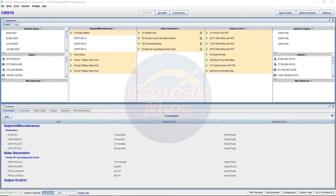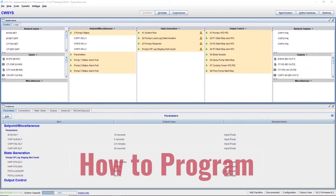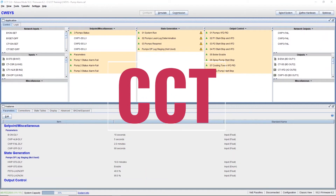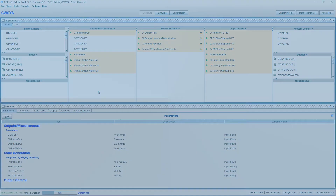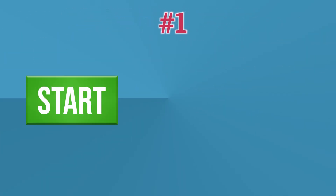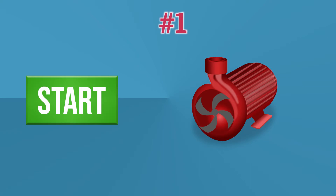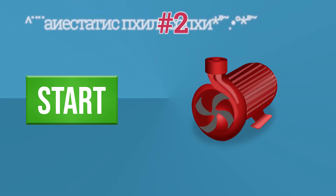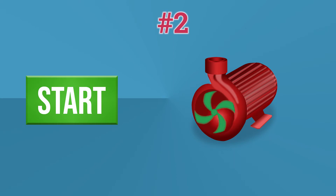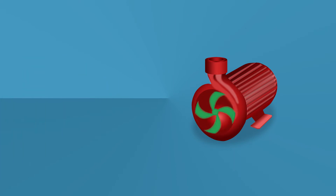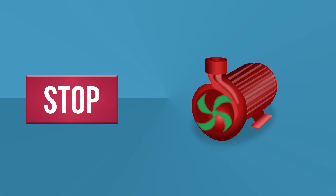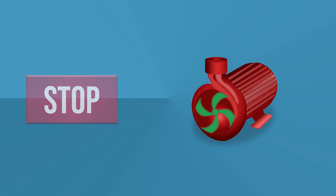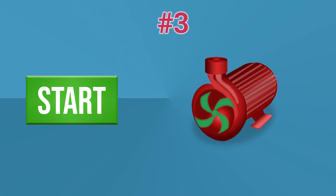Welcome back to Controls Hero. Today I want to show you how to program a pump alarm in CCT, and I'll do three different examples. Number one: when you have a start command and your pump doesn't start, or you lose status while it's running. Number two: same as number one, but also when your pump is running but you don't have a start command — like putting your pump in hand when your controller is not telling it to run. And number three: how to lock out your pump as soon as it goes into alarm.